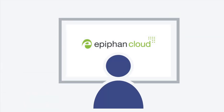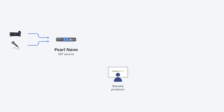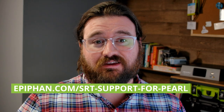Another big advantage with Pearl systems is end-to-end control. Using Epiphan Cloud or another remote access solution, producers can remotely log into Pearl systems to test and configure those devices. This way, guests don't have to be live streaming pros to take part in a production. Check out this link to learn more about SRT support on Pearl systems, or email us at info@epiphan.com with any questions. Thanks for watching.